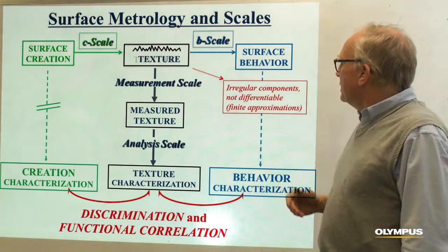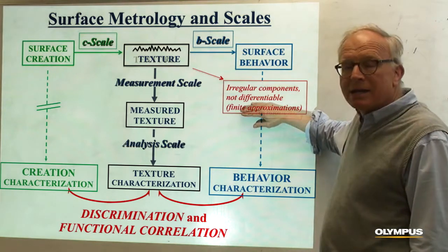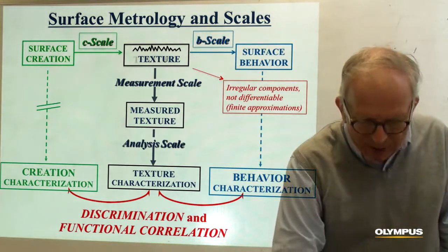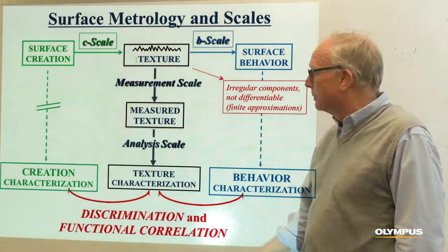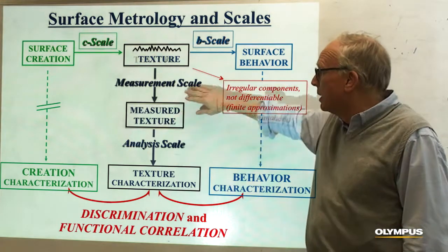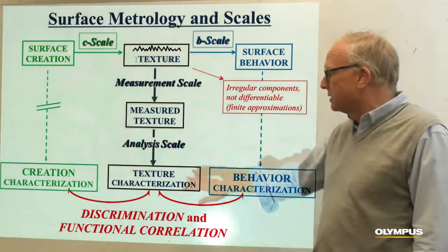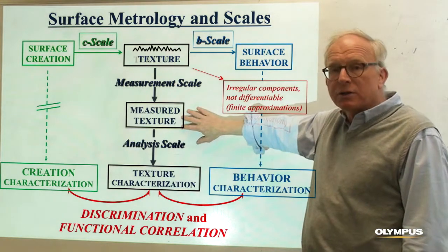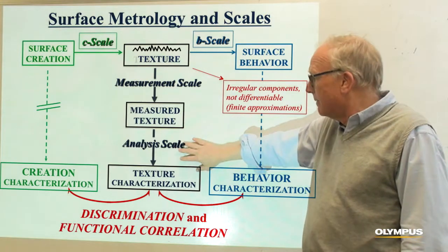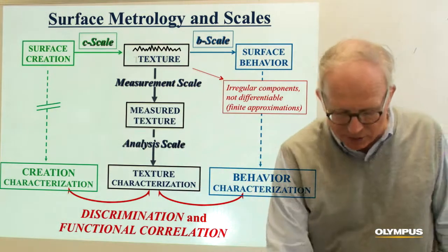These irregular components can be complicated and not differentiable. So we're not actually doing derivatives but finite approximations generally, because they're not differentiable. We measure and get a measured texture. There are certain scales at which we make the measurement. Then we get these measured textures, which can be millions or more elevations in a data set, and then we need to analyze these and come up with texture characterization parameters.